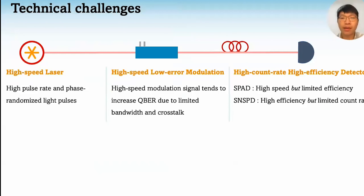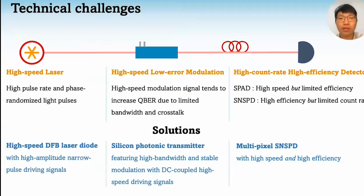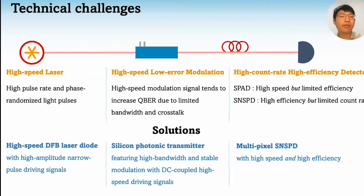For a BB84 system as an example, we think there are three hardware challenges: how to generate high pulse rate and phase-randomized light pulses, how to maintain low error rate in high-speed modulation, and how to detect large photon counts with high efficiency. In our work, we use a high-speed distributed feedback laser, a low-error silicon photonic transmitter, and multi-pixel superconducting nanowire single-photon detectors with high efficiency to solve these three issues.